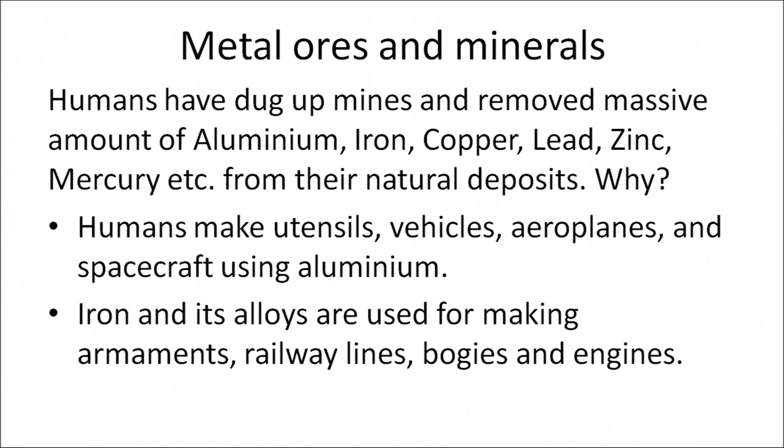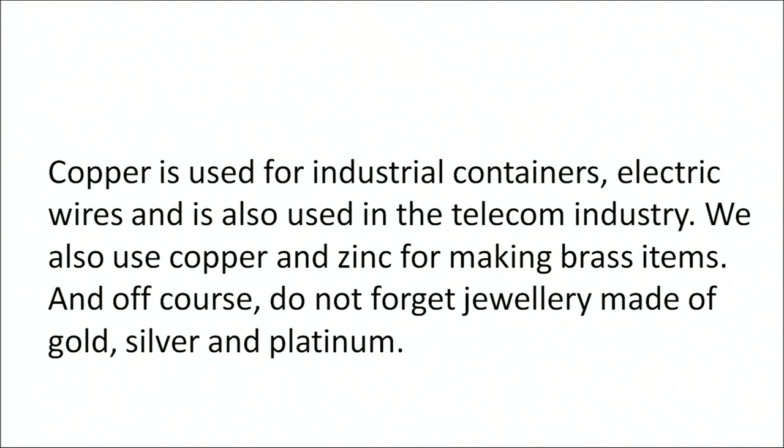Humans make utensils, vehicles, aeroplanes, and spacecraft using aluminum. Iron and its alloys are used for making armaments, railway lines, bogies, and engines. Copper is used for industrial containers, electric wires, and in the textile industry. We also use copper and zinc for making brass items, and of course gold, silver, and platinum for jewelry. Natural resources such as land, water, energy, and minerals have all been utilized by humans since long.